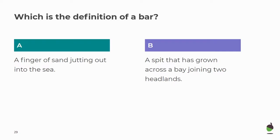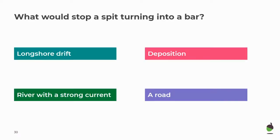Let's test you — what's the definition of a bar? A or B? You should have got B: a spit that has grown across a bay joining two headlands. Definition A was a spit. What would stop a spit turning into a bar? It is a river with a strong current that would wash away the sand and stop deposition happening.